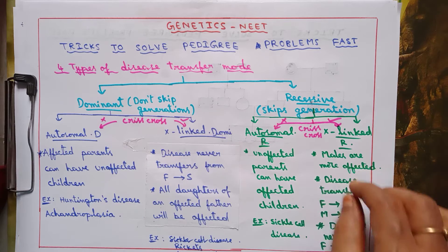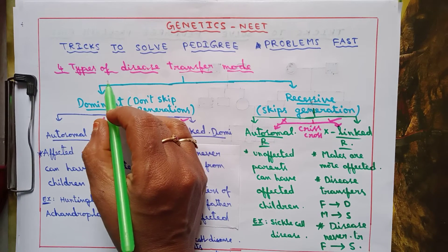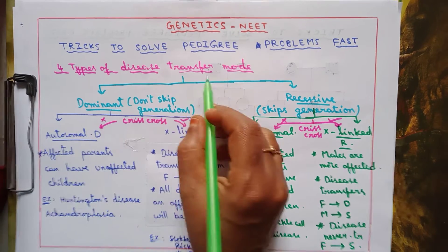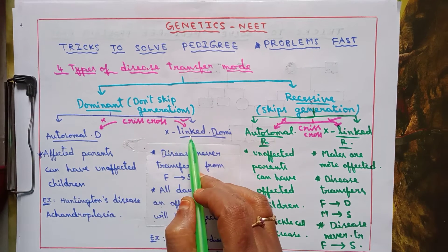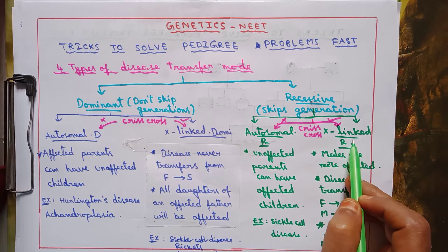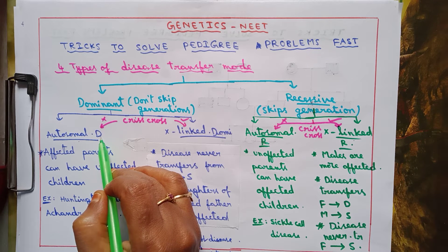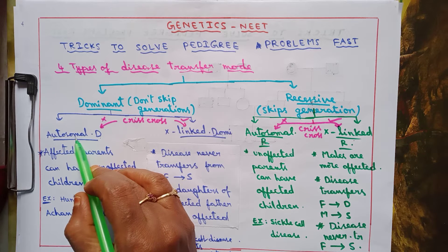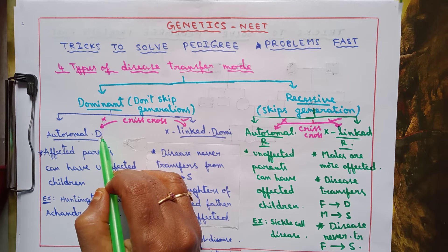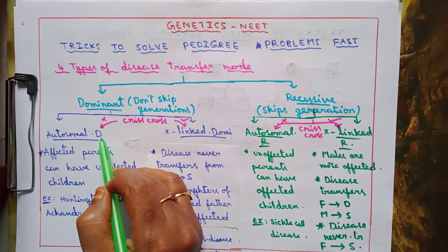In this video I am going to give you tricks to solve pedigree problems very fast, in very few seconds. There are four types of disease transfer modes: autosomal dominant, x-linked dominant, autosomal recessive, and x-linked recessive. Autosomal dominant means the gene responsible for the disease is present on an autosome, and its expression is dominant — it can be expressed under homozygous or heterozygous dominant conditions.